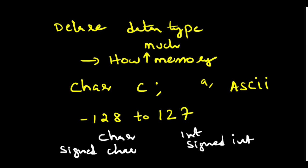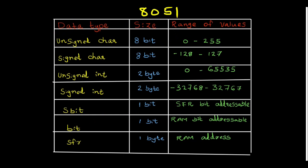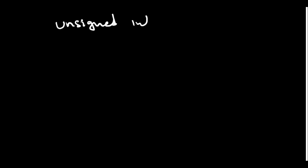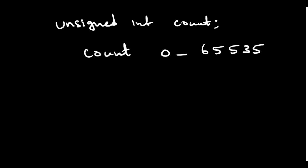Then we have unsigned int. Int is a two-byte variable. When you declare a variable like unsigned int count, that count variable is two bytes. If you use it as a counter it can count from 0 to 65535.